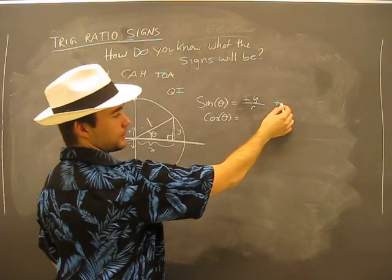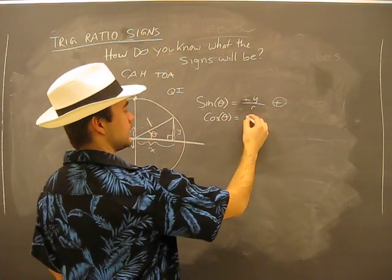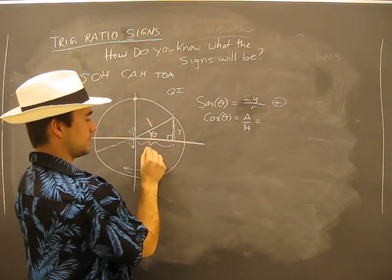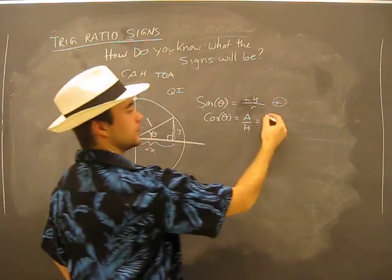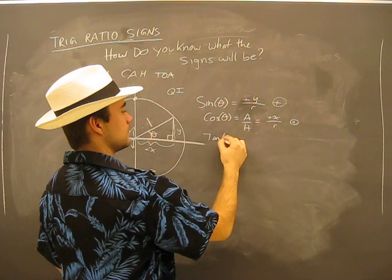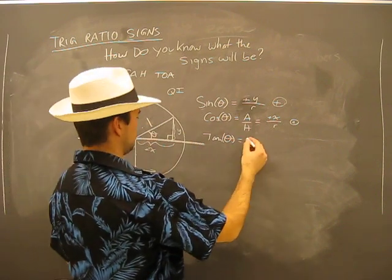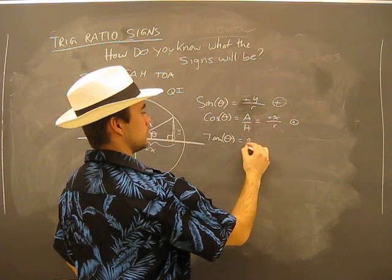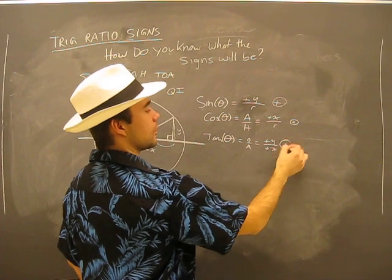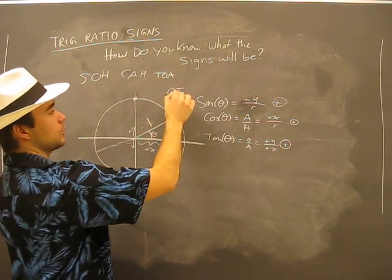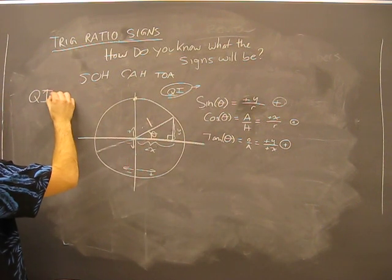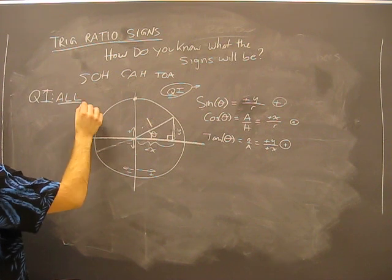So we know sine is going to be positive. Cosine theta is a positive x value because we're moving right, so positive x over radius — that's also positive. And tan theta is opposite over adjacent, so positive y over positive x, which clearly is also going to be positive. So in quadrant one, all ratios are positive.